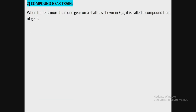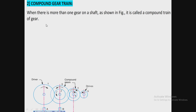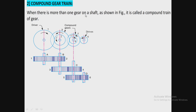We have discussed the simple gear train; now we are going to move towards the compound gear train. When there is more than one gear on a shaft, as shown in the figure, it is called a compound gear train. Here the first gear is the driver and the last gear is the driven. Instead of an intermediate or idle gear, compound gears are used between them.